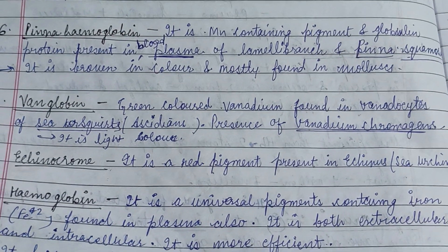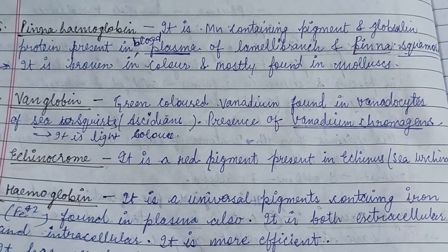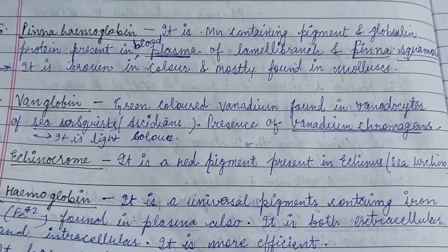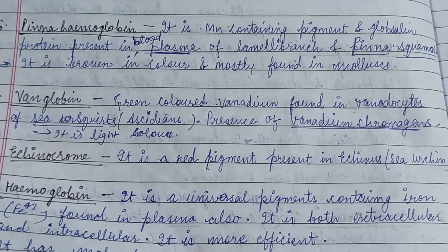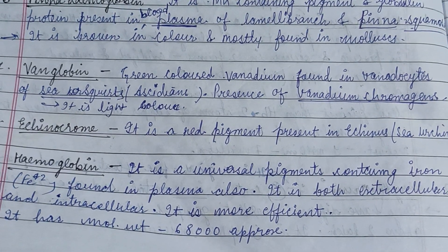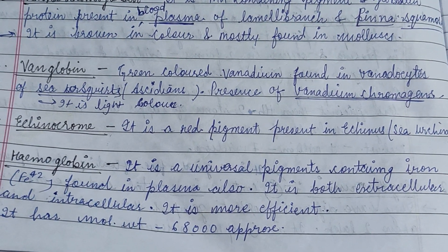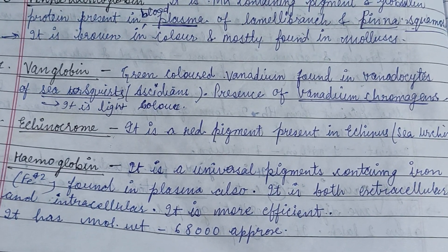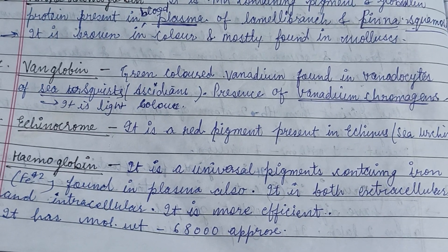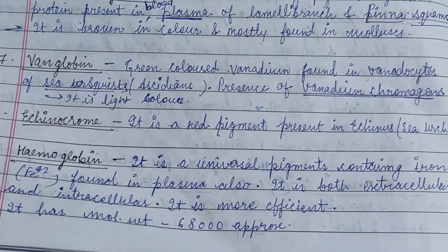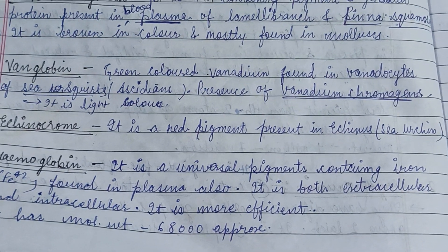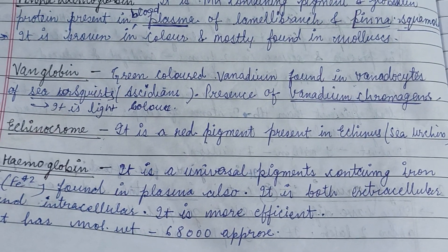Pinnaglobin is found in pinnacean animals and is a manganese-containing pigment. Vanadoglobin is a green-colored vanadium-based pigment found in the vanadocytes of sea squirts, also known as ascidians. Echinochrome is a red pigment present in sea urchins and echinoderms.